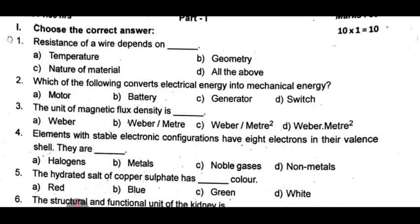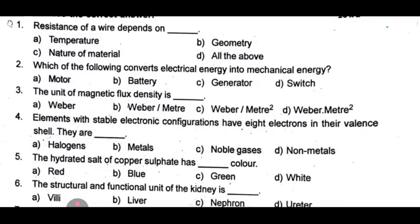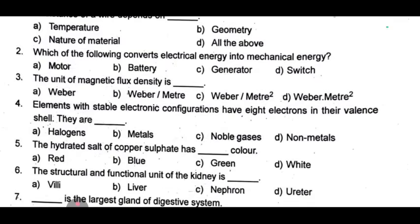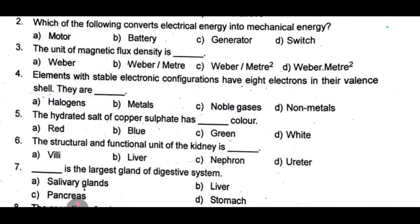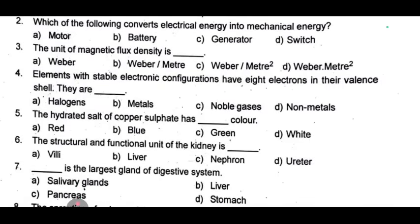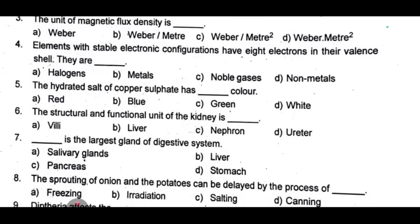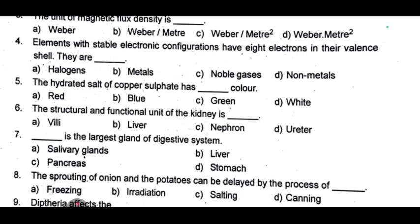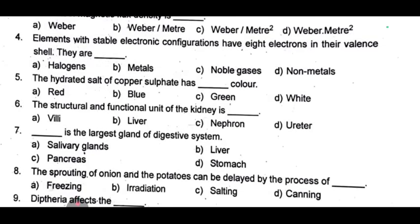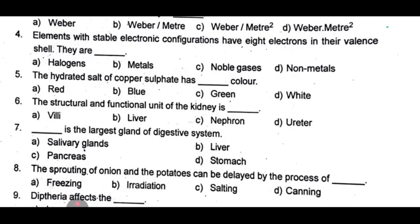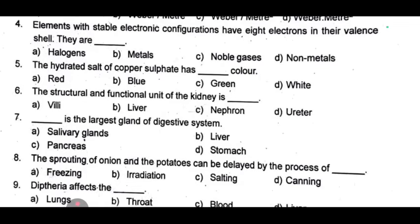5th one: the hydrated salt of copper sulphate has dash colour. 6th one: the structural and functional unit of the kidney is dash. 7th one: dash is the largest gland of the digestive system. 8th one: the sprouting of onion and potatoes can be delayed by the process of dash.